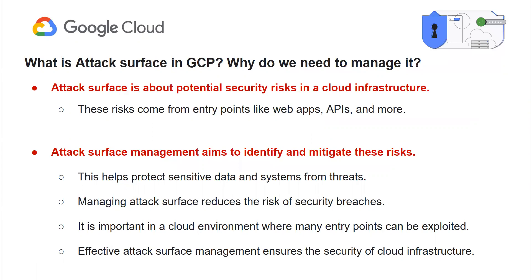Before talking about how Mandiant helps in attack surface management, let's first understand what attack surface in GCP is. Attack surface in GCP refers to various entry points, network configurations, and access permissions of a cloud infrastructure that are potentially vulnerable to security threats. These entry points could include web applications, APIs, cloud storage, virtual machines, and more. Attack surface management in GCP security is the process of identifying and mitigating these security risks, ensuring the protection of sensitive data and systems from malicious actors and accidental breaches.